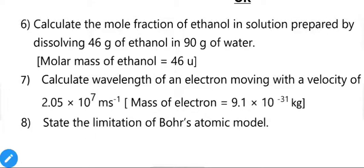Sixth question: calculate the mole fraction of ethanol in a solution prepared by dissolving 46 grams of ethanol in 90 grams of water. Molar mass of ethanol is 46. Find moles of ethanol: 46/46 = 1 mol. Find moles of water: 90/18 = 5 mol. Mole fraction of ethanol = moles of ethanol ÷ (moles of ethanol + moles of water).